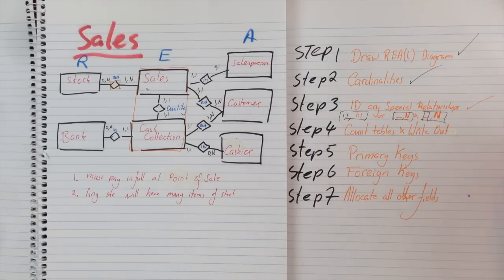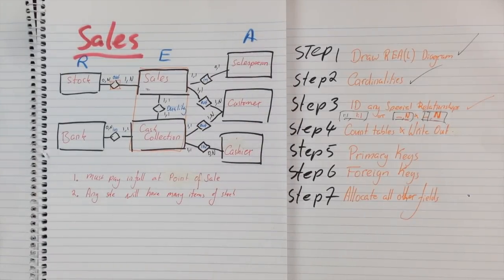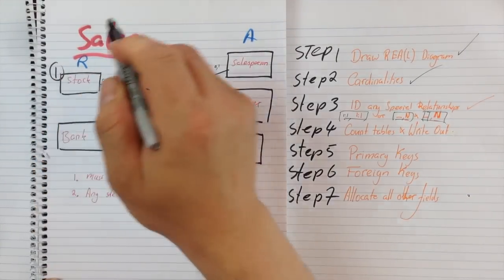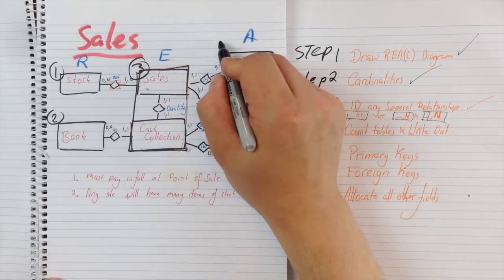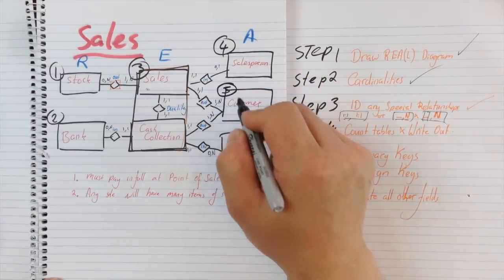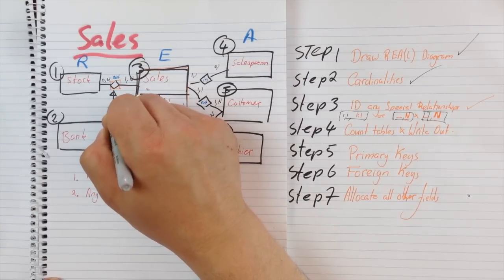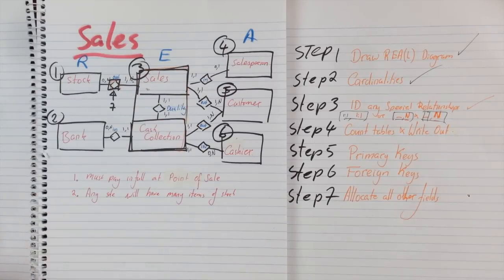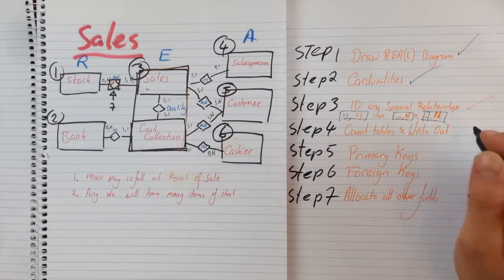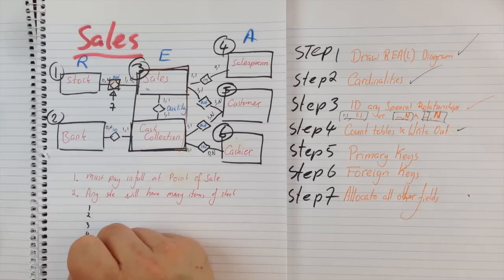Now we need to look at step 4, which is to count the number of tables and write those out. If I count these I can see that I need table 1, 2, 3 — and table 3 includes the collapsed sale and cash collection — 4, 5, 6, and this last table here is a 7th table, and that's because we now have a matching table due to our many-to-many relationship. So all I do is count those tables out and write them out: 1, 2, 3, 4, 5, 6, 7.